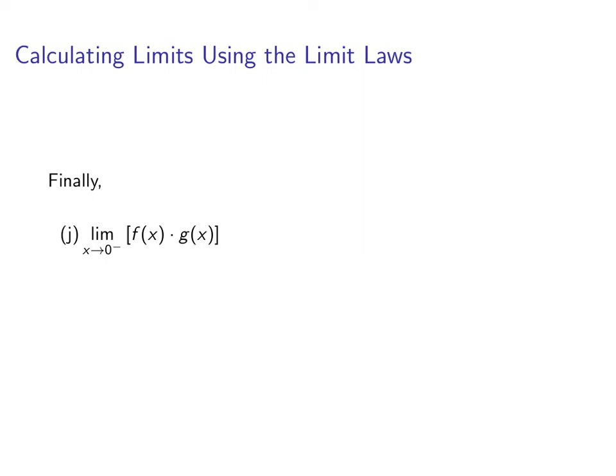Finally, if we look at the limit as x approaches zero of f(x) times g(x), limit law four says we can break it up into a product. That's going to equal three times two, based on the picture, which is six.